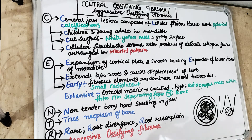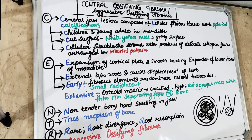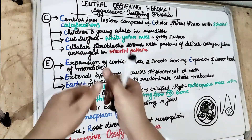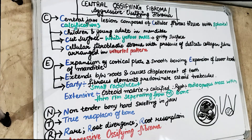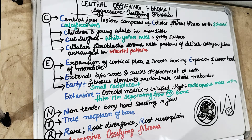So this is about the central ossifying fibroma. Initially it is fibrous, later on it gets calcified; there are spherical calcifications which get ossified, and hence extensive lesions have a hard bony-like swelling in the jaw. I hope you enjoyed the video — give it a thumbs up, comment below, and there is a link in the description box to support us on Patreon as well as PayPal to help make free videos and notes for you.